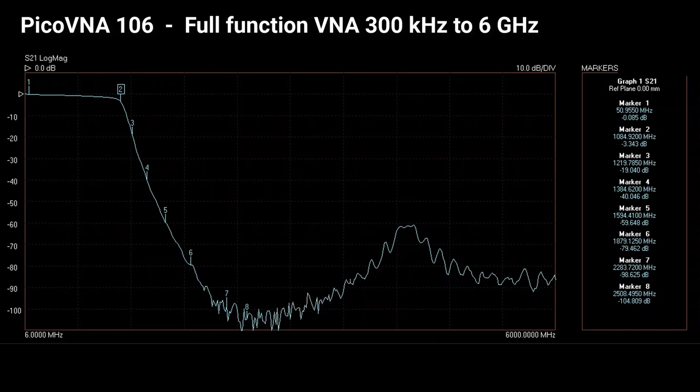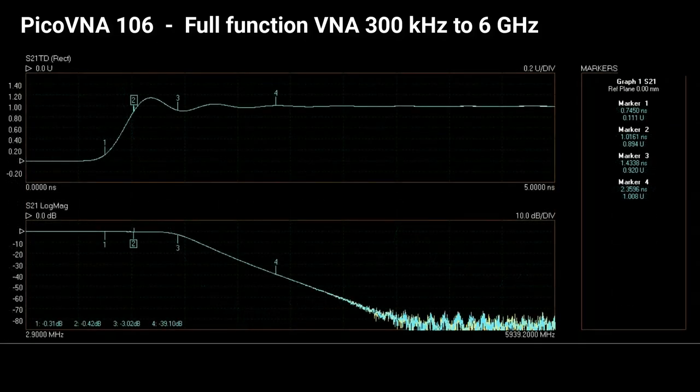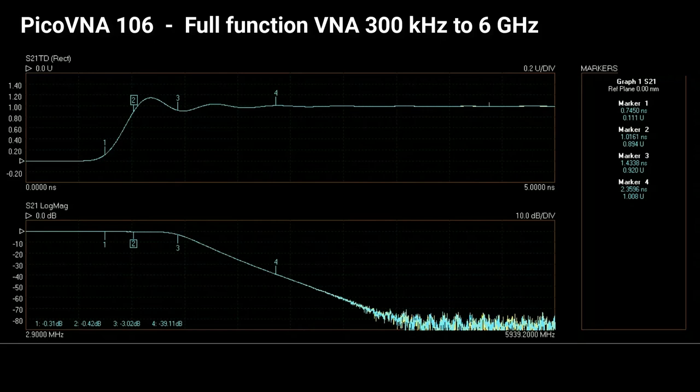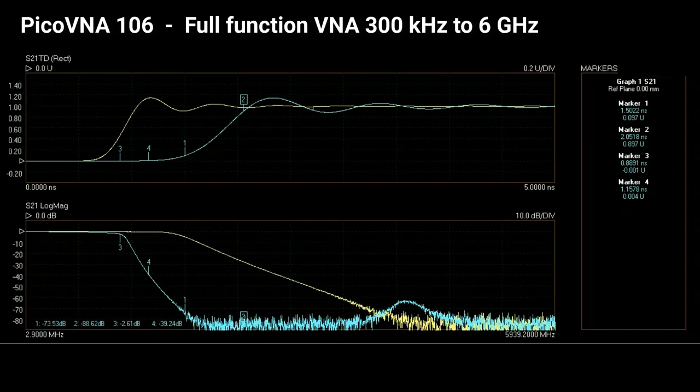Performance and value doesn't stop there either. Typically a $2000 option, Pico includes time domain measurement at the single price. And here we see a comparison of two filter responses. Time domain, the pulse step response at the top, frequency domain at the bottom.